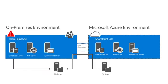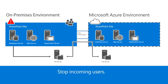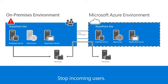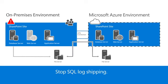When trouble strikes, switch the users to Azure so they can keep working. The process works like this: stop incoming user traffic to the on-premises SharePoint web server — you can do this by disabling DNS entries or shutting down the web server. Then stop the SQL log shipping to Azure.